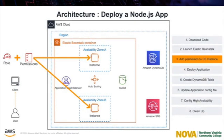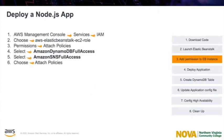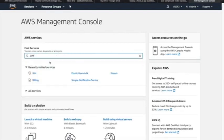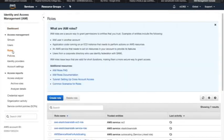That step is adding permissions to the EB instance. The sample application uses instance permissions to write data to a DynamoDB table and to send notifications to an Amazon SNS topic, using the SDK for JavaScript in Node.js. Add DynamoDB and SNS full access managed policies to the default instance profile to grant the EC2 instance in your environment permission to access DynamoDB and Amazon SNS.